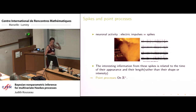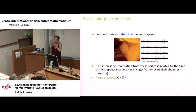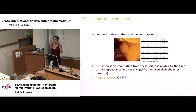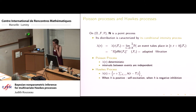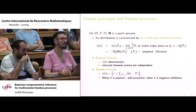You have some neurons and they have some spikes, and what you're interested about is understanding the interactions between the neurons — how a spike in a neuron can fire another spike, or on the contrary inhibit another spike. We're going to model that using point processes. Just one slide recall on point processes.